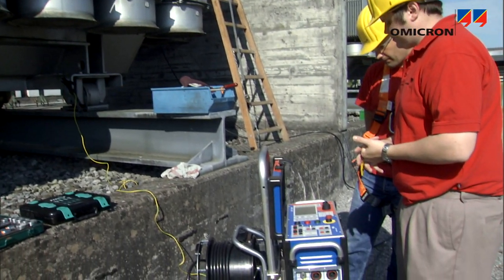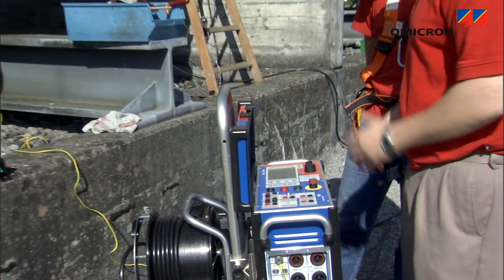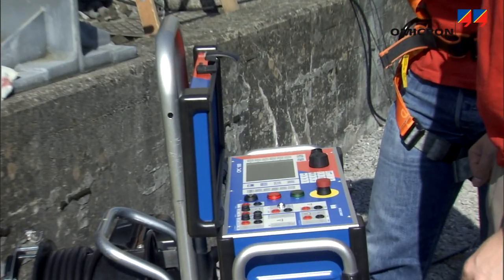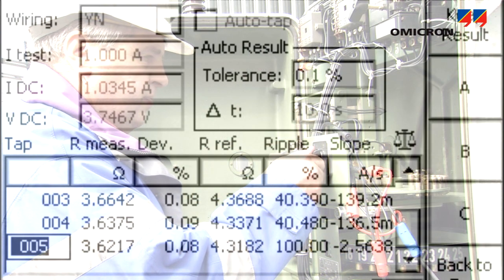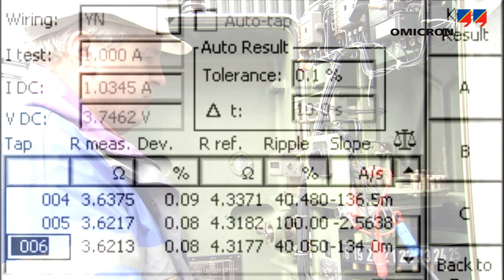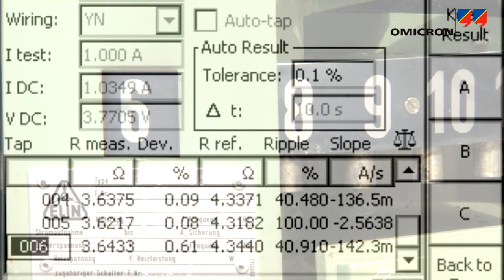The CPC makes this measurement easy by combining the resistance measurements for all taps in one sequence. Each time the user operates the tap changer, the CPC measures and displays the winding resistance at this tap position as soon as the values have stabilized.